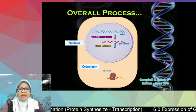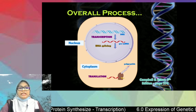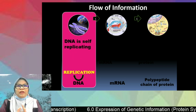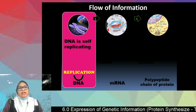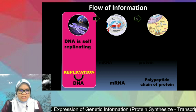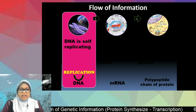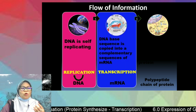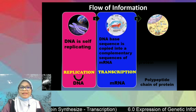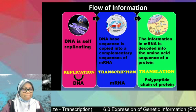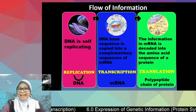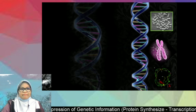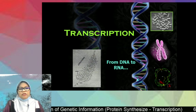The product of translation is polypeptide, which is a protein. This flow of information is called the central dogma. DNA replicates to produce double-stranded DNA, which then acts as a template in transcription to produce mRNA. The mRNA then becomes a template in translation to produce polypeptide, which is the protein. Now let's take a look at what transcription is.